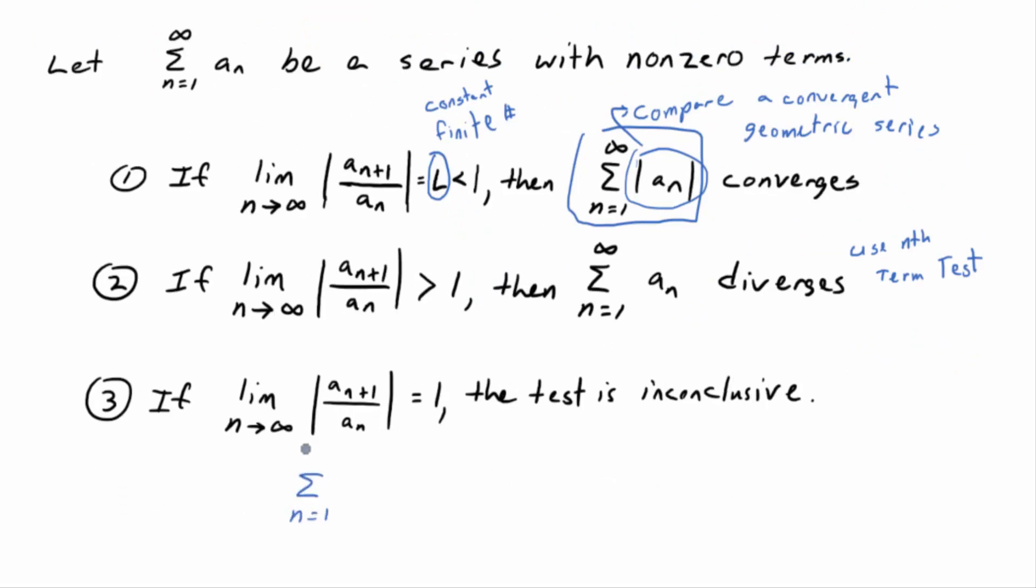I can show you it's inconclusive by talking about two P series. The sum N equals 1 to infinity of 1 over N and the sum N equals 1 to infinity of 1 over N squared. We know this first guy diverges. And then, the second guy converges. Because in the first one, P is equal to 1. In the second one, P is equal to 2.